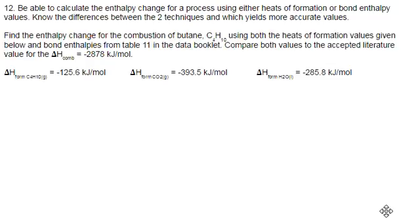Number 12 says be able to calculate the enthalpy change for a process using either heats of formation or bond enthalpy values. Know the difference between the two techniques and which yields more accurate values. Find the enthalpy change for the combustion of butane, C4H10, using both heats of formation values given below and bond enthalpies from table 11. Compare both values to the accepted literature value for the heat of combustion of negative 2878.